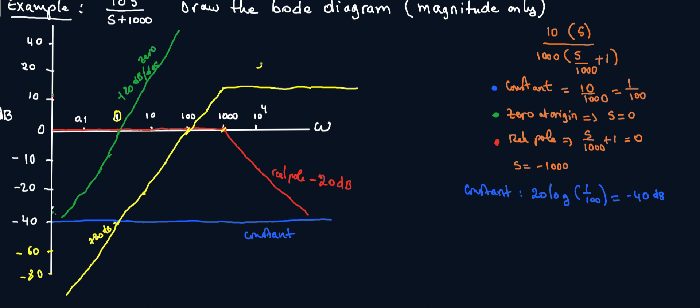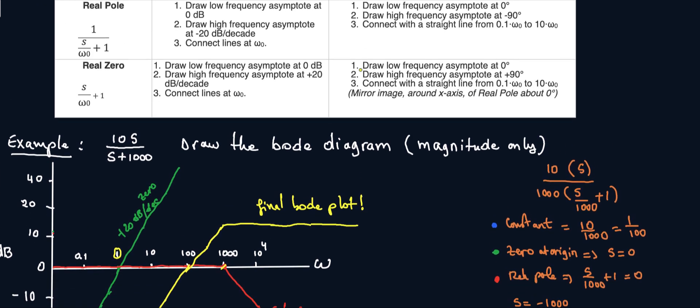So the yellow is the final, final Bode plot. So again, let's recap here. First step is to simplify the transfer function to unity. Step number two is to determine your terms. And step number three is to draw each term according to, you know, if it's positive slope, negative slope, it's got to go through zero dB, you know, whatever it is based on this table here.